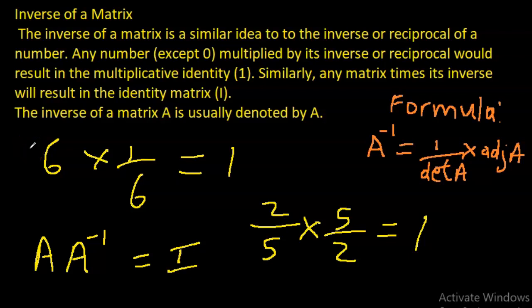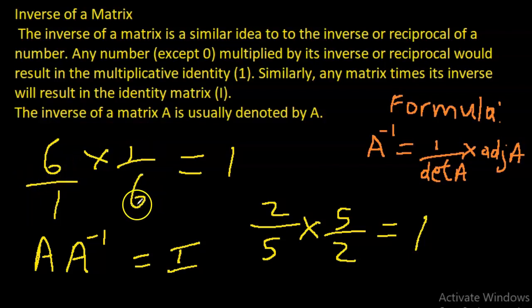The inverse of a matrix is a similar idea to the inverse or reciprocal of a number, except zero — zero does not have a reciprocal. Any number multiplied by its inverse or reciprocal results in the multiplicative identity. For example, the number six multiplied by its reciprocal one over six gives you one.